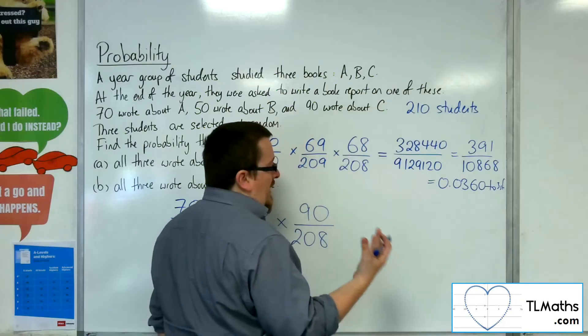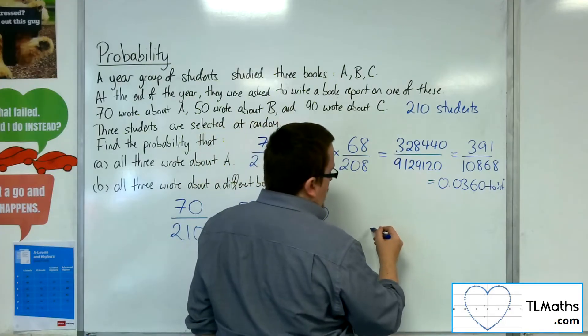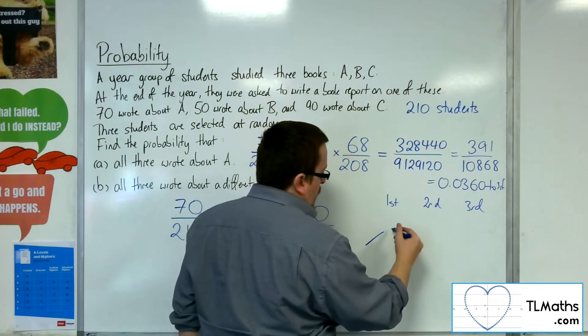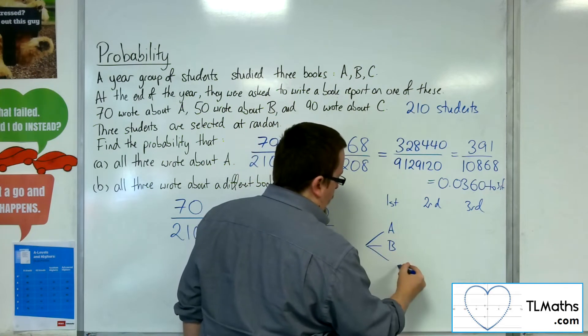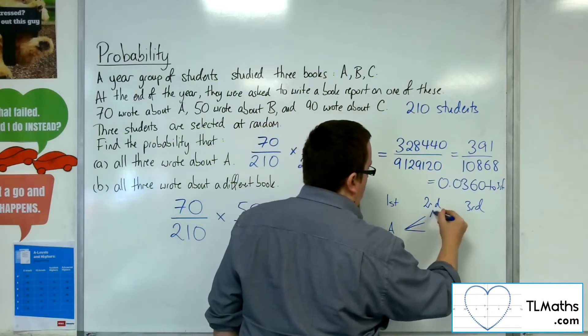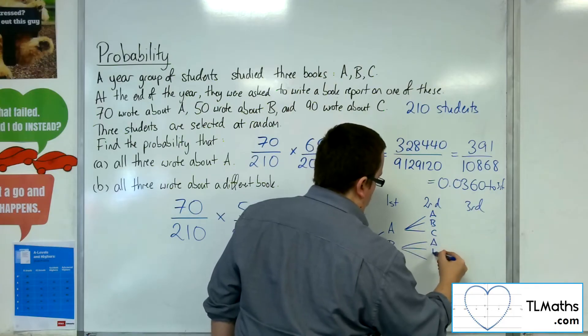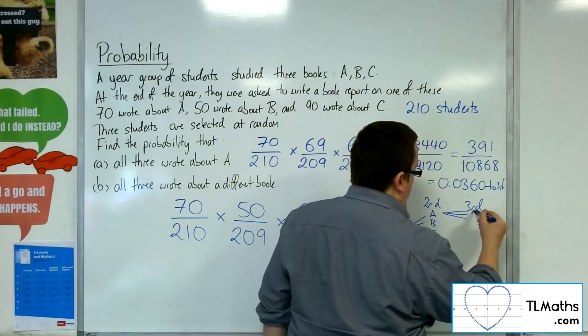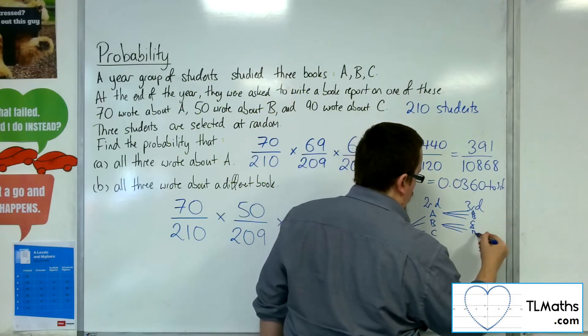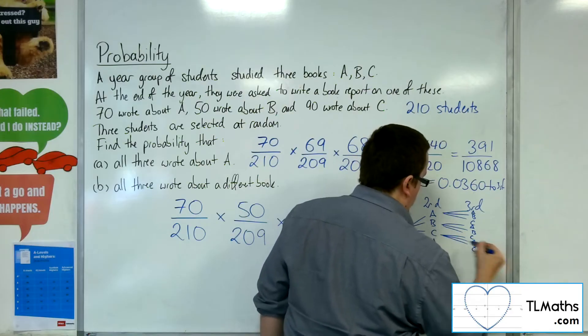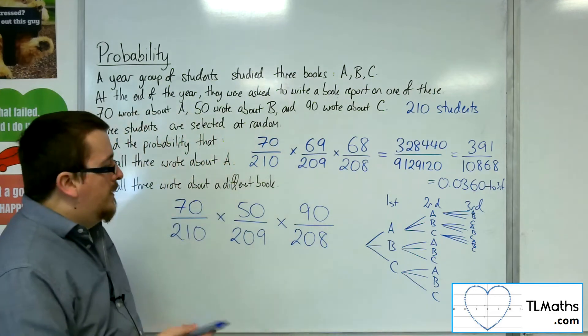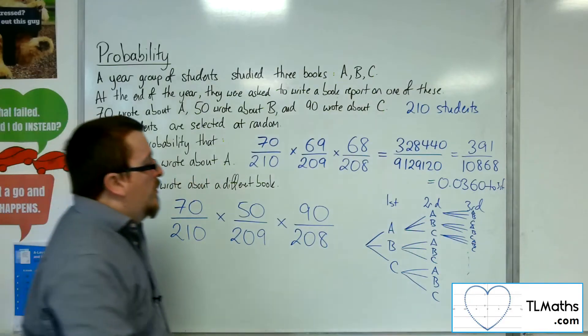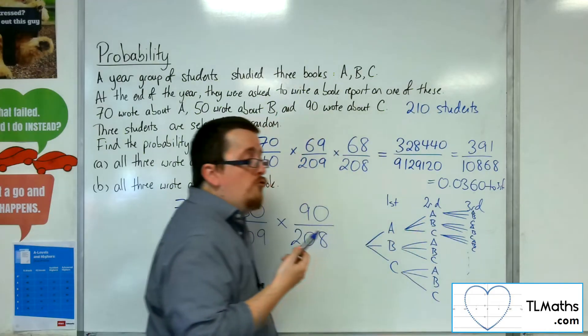How you want to think about this is as a probability tree. The first choice, second choice, and third choice of students. The first book report could either be about A, B, or C. The second book report could be about A, B, or C for each of those first choices. And then from each of those, I could have had A, B, C. I'm not going to go through and draw all of these. If you think of the ways that I could pick out three people who picked A, there's only one way, one route through the tree diagram.